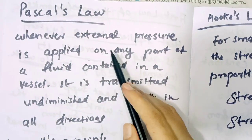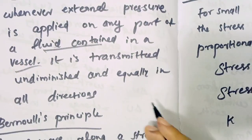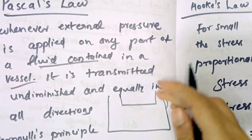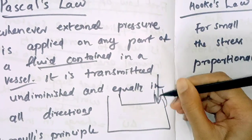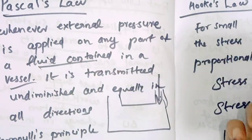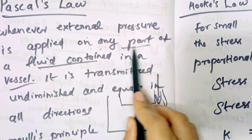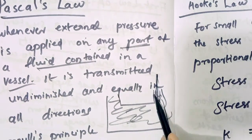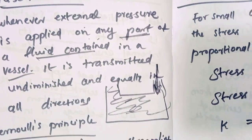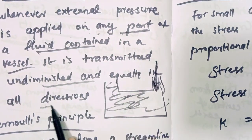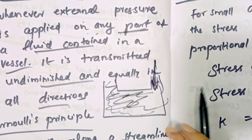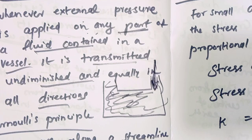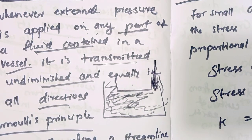Whenever external pressure is applied on any part of a fluid in a vessel, the pressure is transmitted undiminished and equally in all directions. This is Pascal's Law. Whenever we apply external pressure on any part of the fluid, the pressure is transmitted undiminished and equally in all directions.